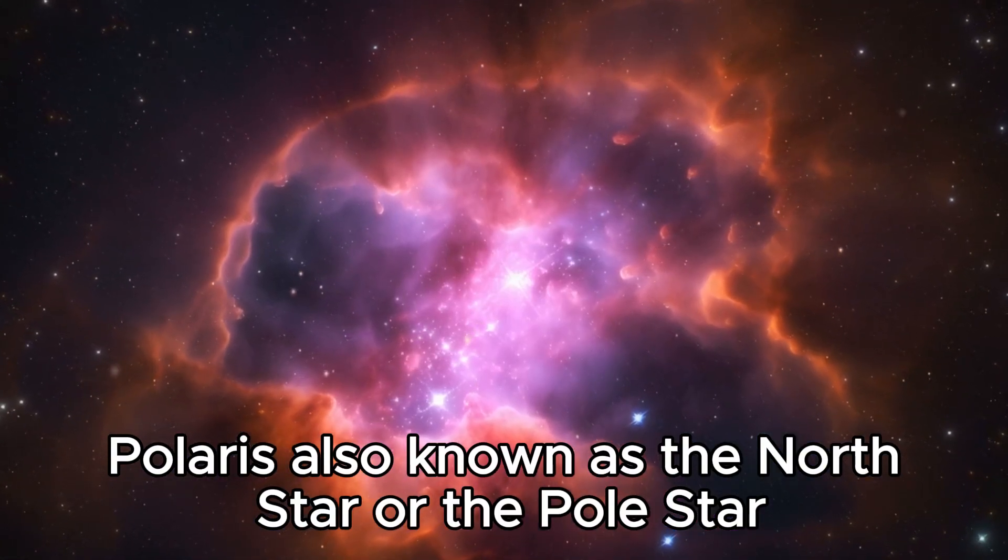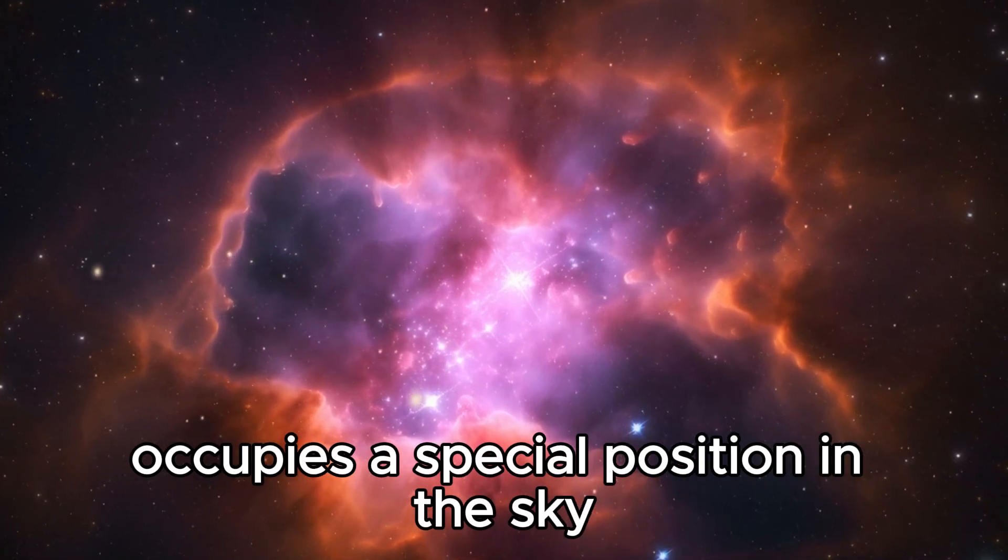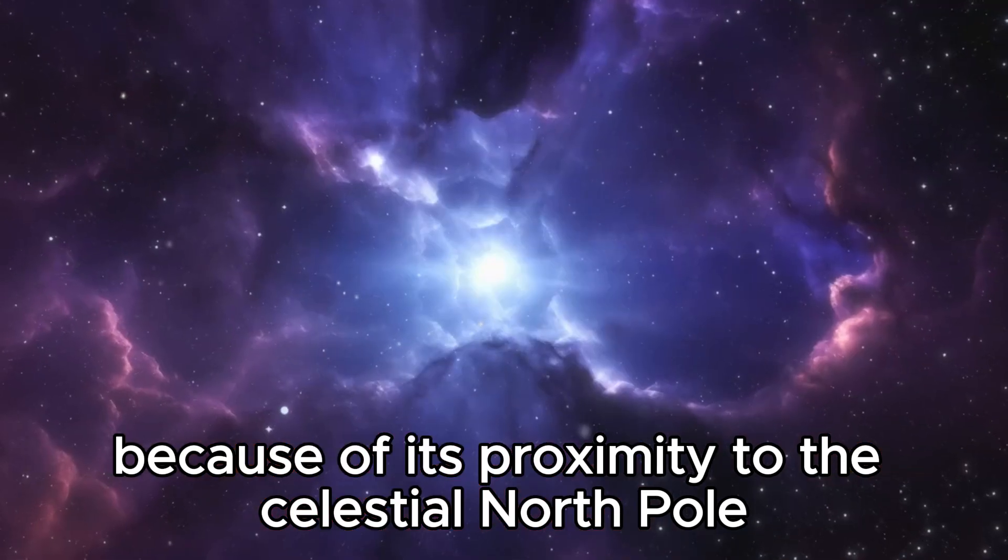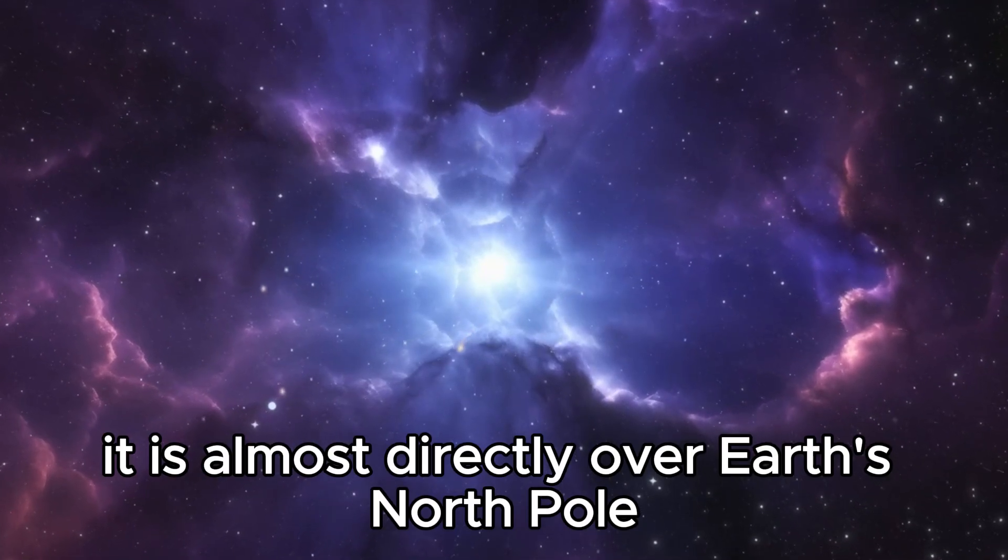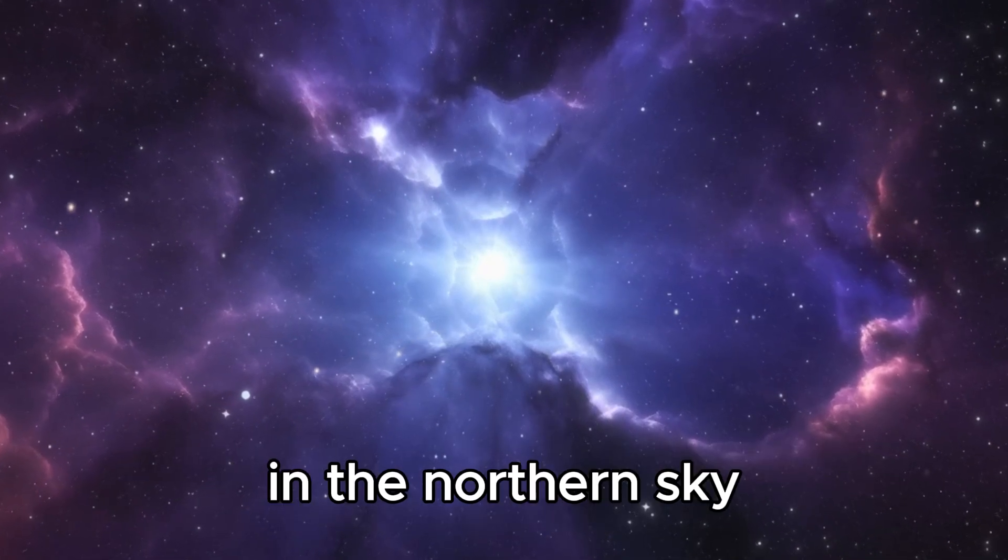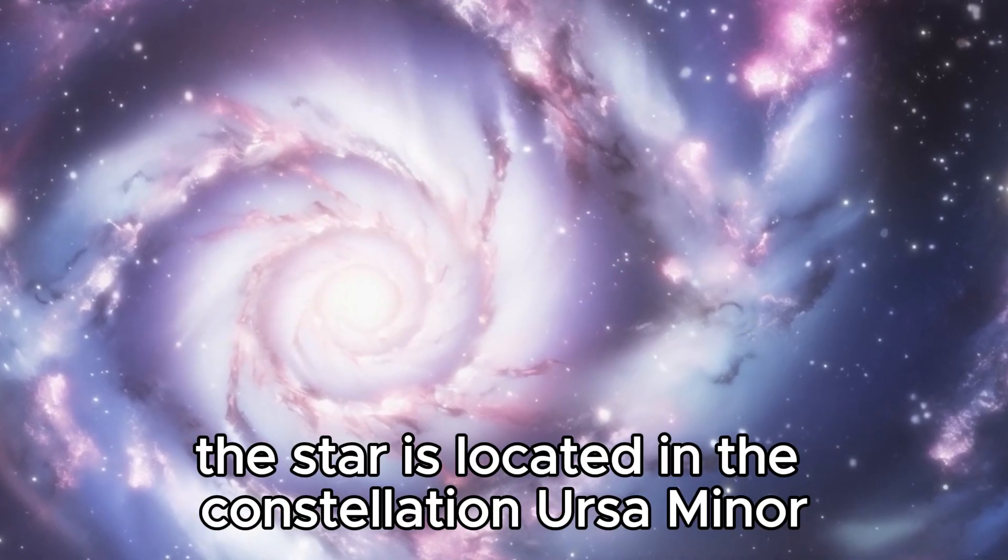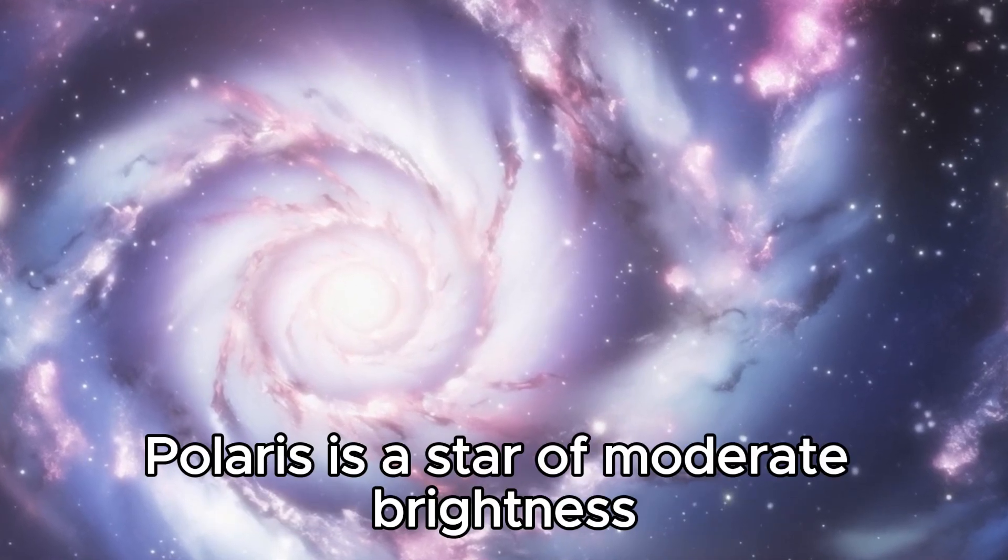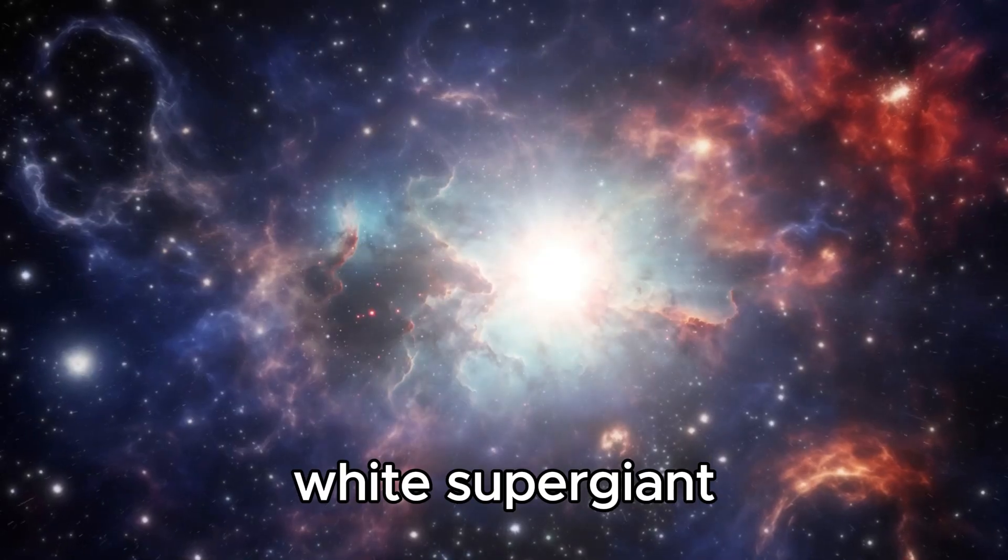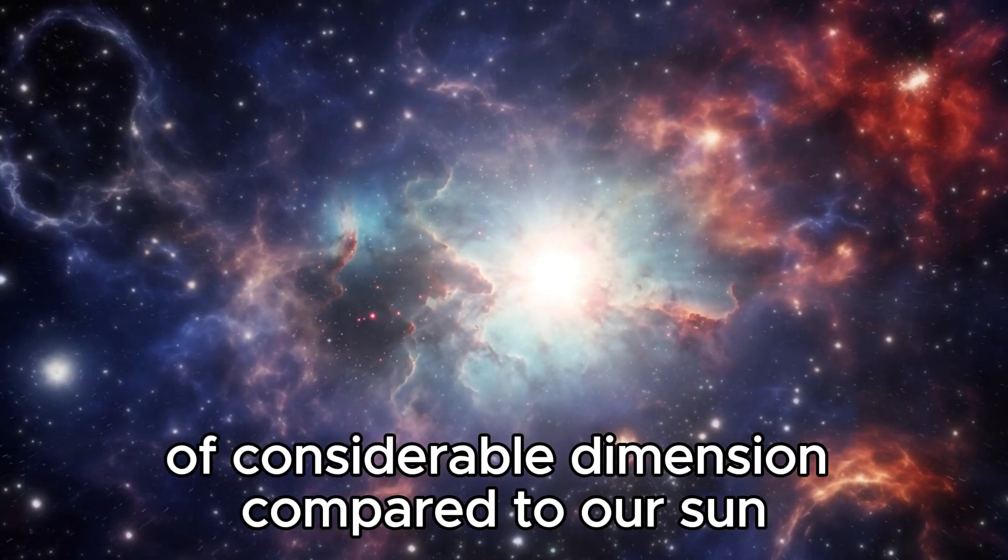Polaris, also known as the North Star or the Pole Star, occupies a special position in the sky because of its proximity to the celestial North Pole. It is almost directly over Earth's North Pole, which gives the illusion that it remains static in the northern sky. The star is located in the constellation Ursa Minor. Polaris is a yellow-white supergiant of considerable dimension compared to our Sun.